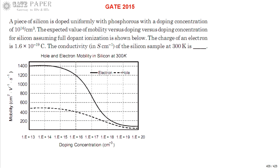We are discussing the 2015 ECE paper. A piece of silicon is doped uniformly with phosphorus with a doping concentration of 10^16 per centimeter cube. Phosphorus is a pentavalent element, so silicon doped with phosphorus gives rise to n-type silicon — the resultant is an n-type semiconductor.